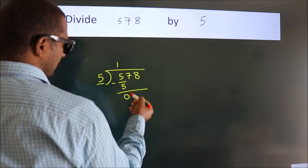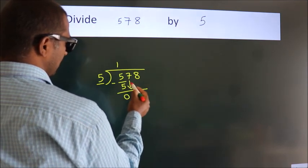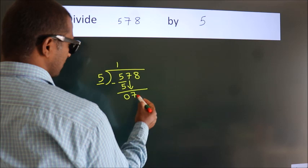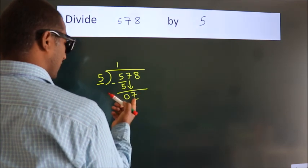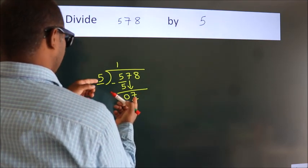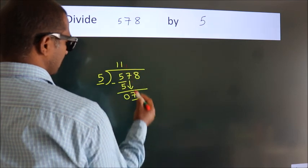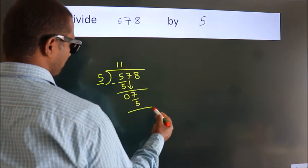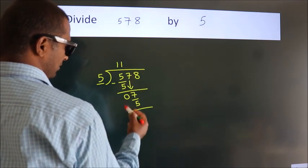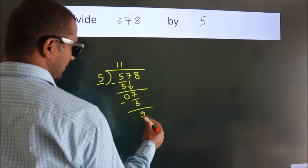After this, bring down the beside number, so 7 down, so 7. A number close to 7 in 5 table is 5 wants 5. Now we subtract, we get 2.